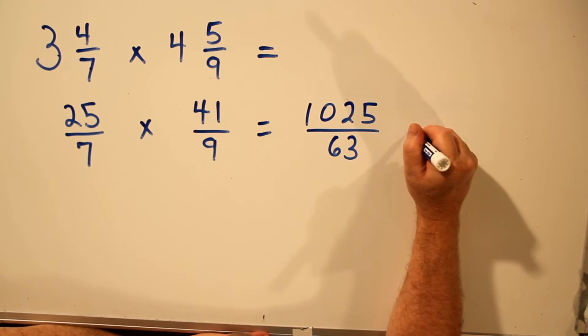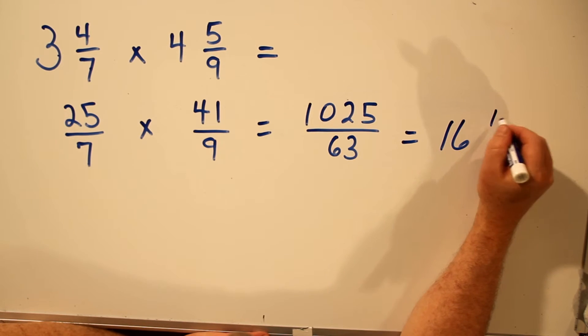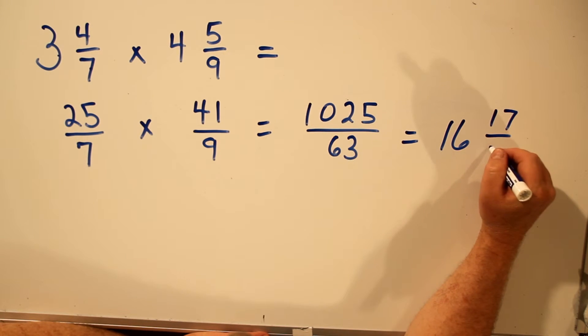So the answer in improper fraction is 1025 over 63, but that's not in simplest form. In simplest form, that would be 16 and 17 over 63.